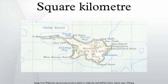For 1:50,000 maps, the grid lines are 2 cm apart; each square is 2 cm by 2 cm and represents 1 km² on the surface of the Earth. For 1:25,000 maps, the grid lines are 4 cm apart; each square is 4 cm by 4 cm and represents 1 km² on the surface of the Earth.